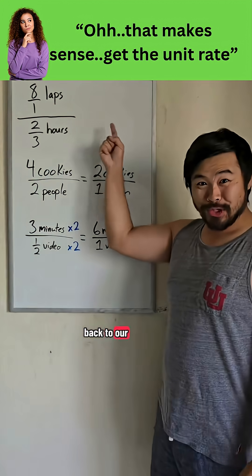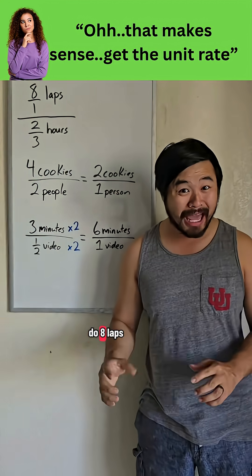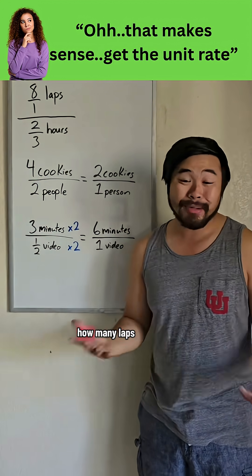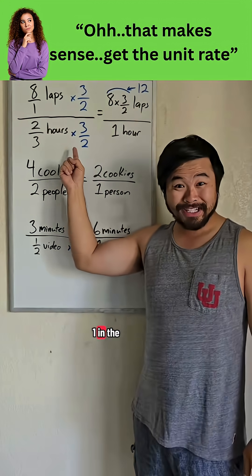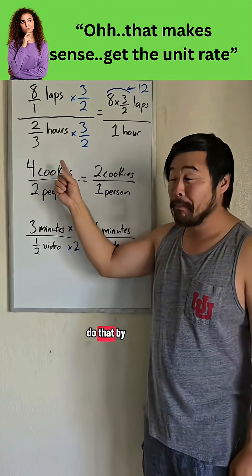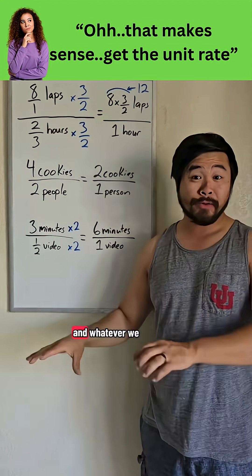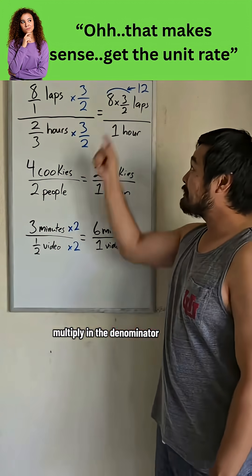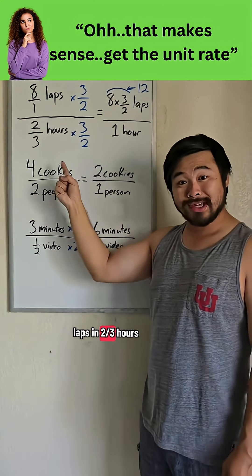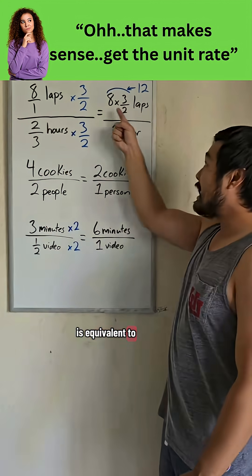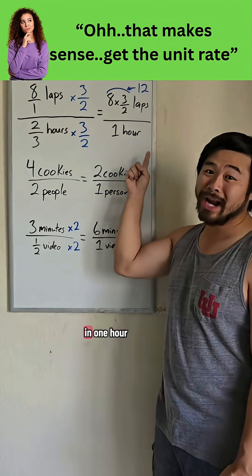Now let's go back to our original problem, but let's add context to this. If I can do eight laps in two thirds of an hour, how many laps can I do in one hour? Our goal is to get one in the denominator, and we can do that by multiplying by its reciprocal, three halves. Whatever we multiply in the denominator, we have to do the same in the numerator. So eight laps in two thirds hours is equivalent to eight times three halves laps in one hour, or 12 laps in one hour.